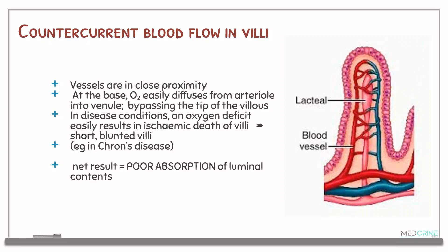There is also counter-current blood flow within the villi. The vessels supplying the gastrointestinal villi are usually in close proximity, and at the base, oxygen easily diffuses from the arterioles into the venules, bypassing the tip of the villus. In disease conditions, oxygen deficit usually results in ischemic death of the villi — short or blunted villi — for example in cases of Crohn's disease, a type of inflammatory bowel disease. The net result is poor absorption of luminal contents from the gastrointestinal tract.